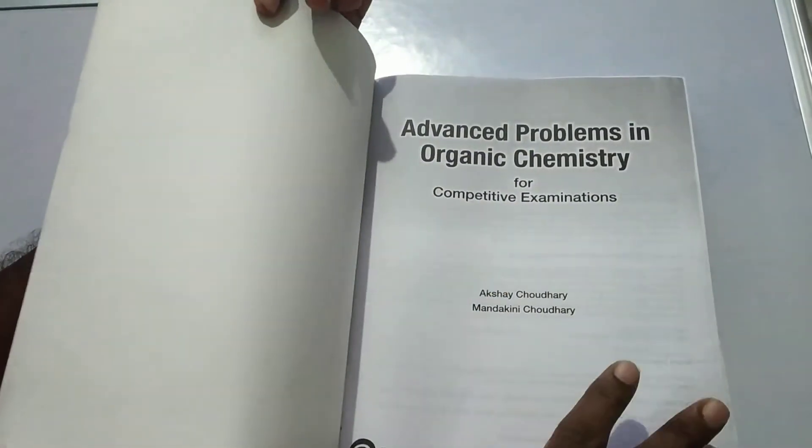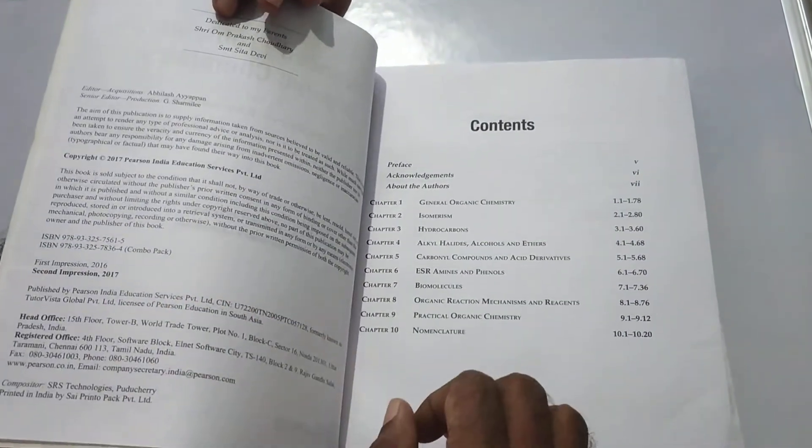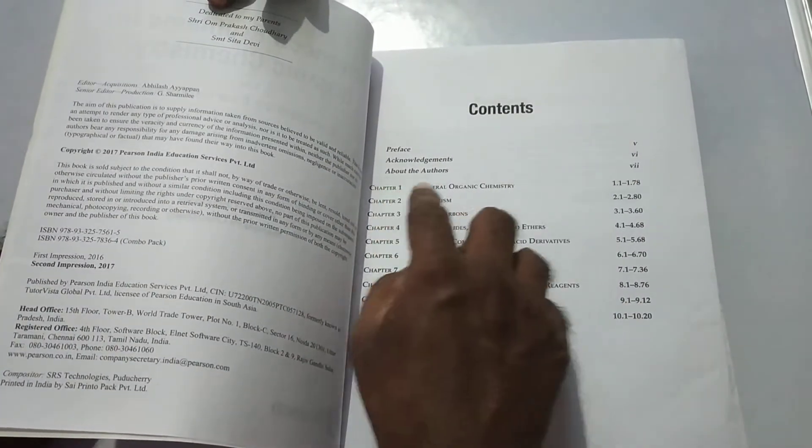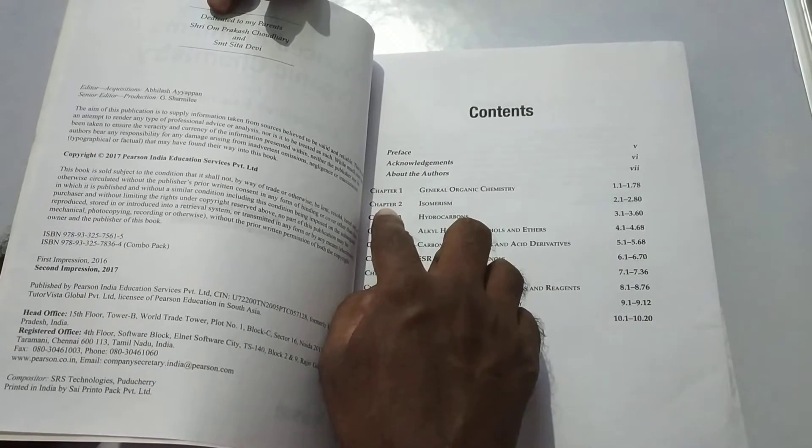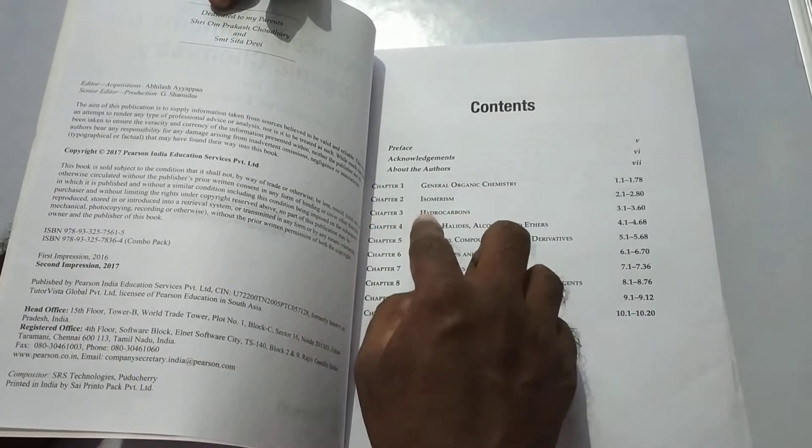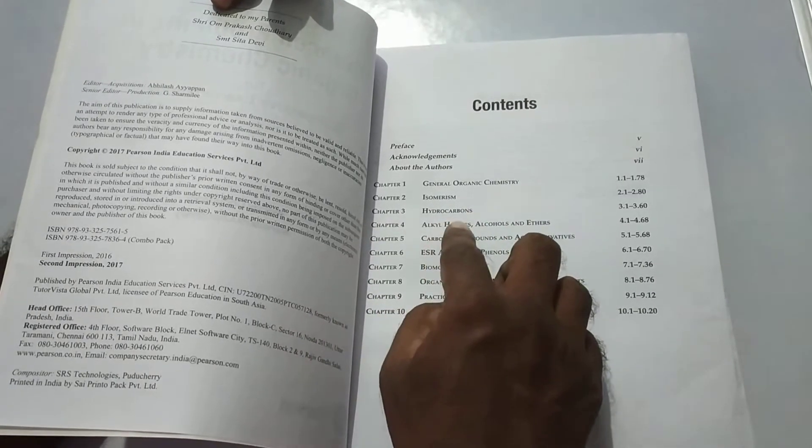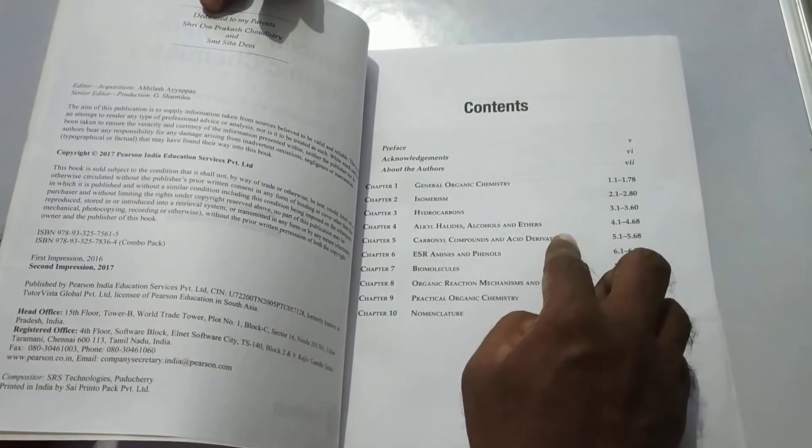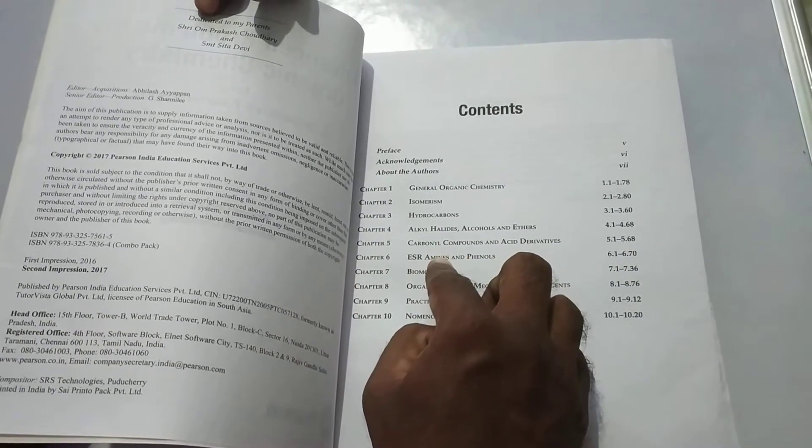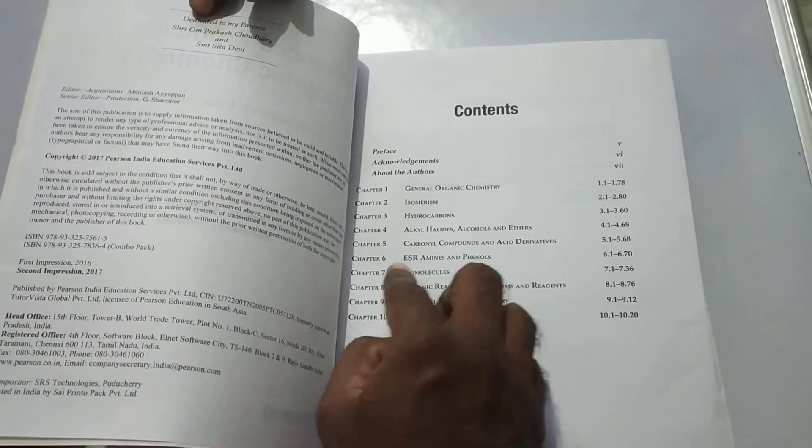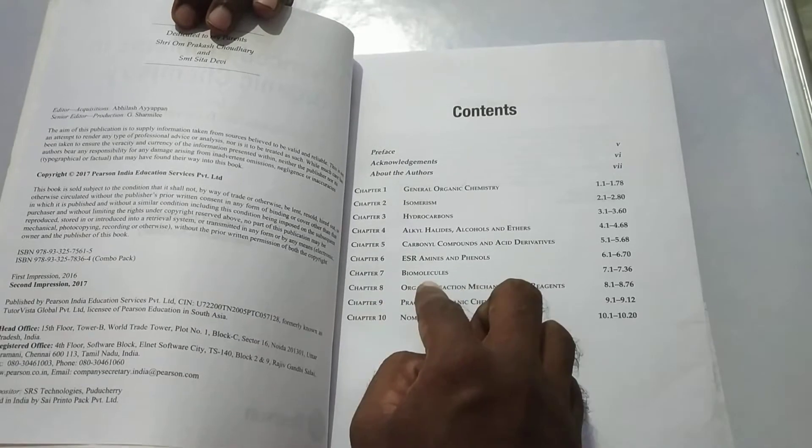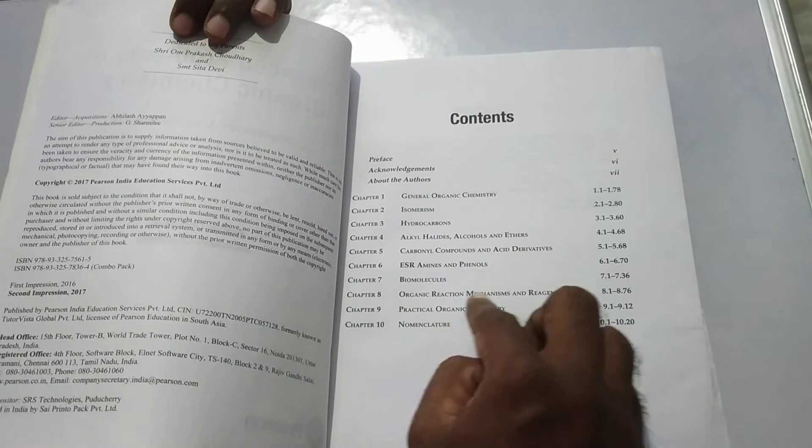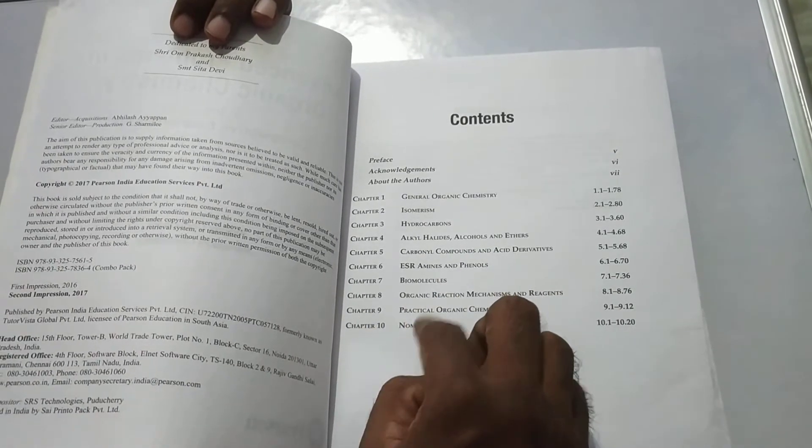Now we are going to see the contents. It contains 10 chapters. Chapter 1 is General Organic Chemistry. Chapter 2 is Isomerism. Chapter 3 is Hydrocarbons. Chapter 4 is Alkyl Halides, Alcohols and Ethers. Chapter 5 is Carbonyl Compounds and Acid Derivatives. Chapter 6 is Esor Amines and Phenols. Chapter 7 is Biomolecules. Chapter 8 is Organic Reaction Mechanisms and Reagents. Chapter 9 is Practical Organic Chemistry. Chapter 10 is Nomenclature.